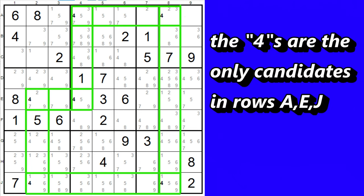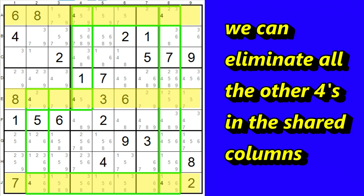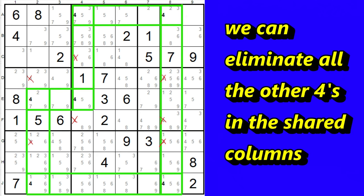Now, since the 4s are the only candidates in those rows, then all the other 4s in the shared columns can be eliminated. Let's take a closer look at the logic behind this and why it works.